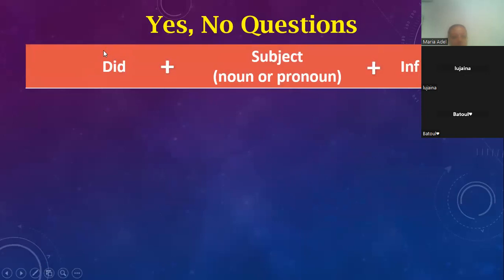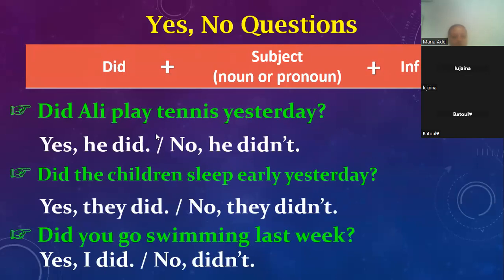Here the auxiliary verb is 'did', then the subject, then the infinitive. Like: 'Did Ali play tennis yesterday?' We answer: yes, he did — or no, he didn't. We replace the subject with the pronoun.